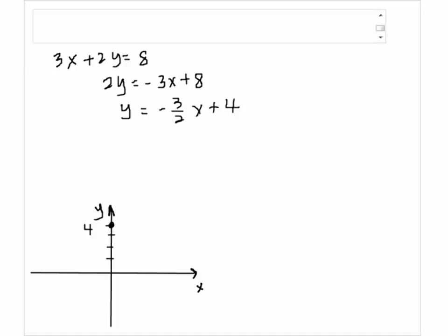And the slope suggests that we go down by 3 and go over by 2 from the y-intercept. So we go down by 3 and go over by 2. So here we have the second point.